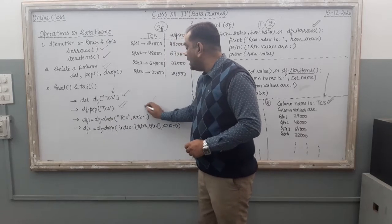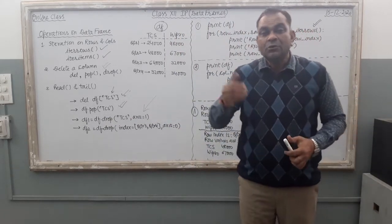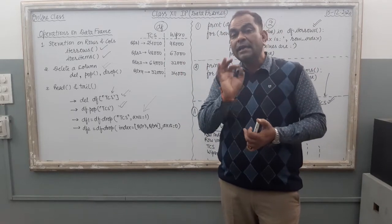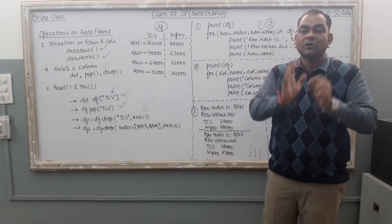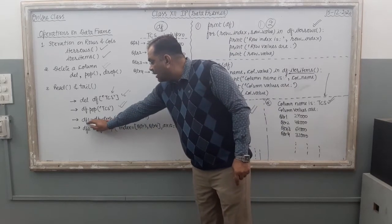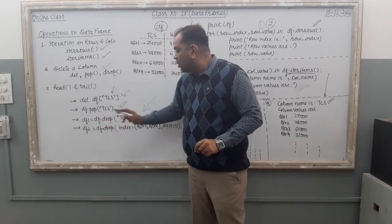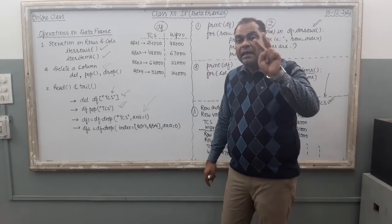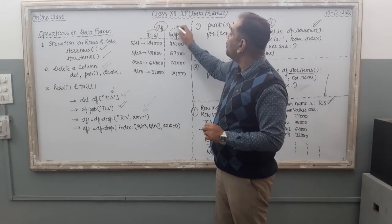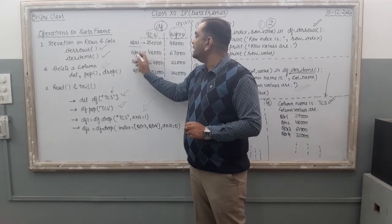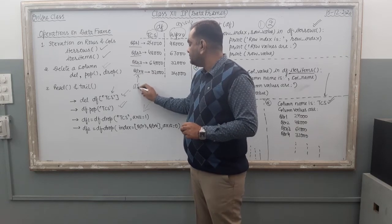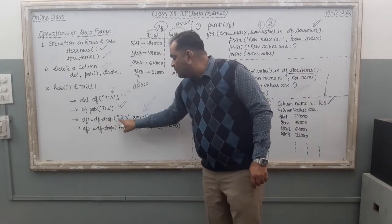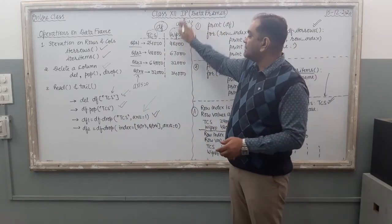Now see what is there with the drop command. The drop command gives us the facility to delete columns from your DataFrame. A new DataFrame is created: df1 = df.drop('TCS', axis=1). Here, axis 1 means columns — TCS and Wipro are on axis 1 position — and axis 0 means indexes. So df.drop('TCS', axis=1) removes the TCS column from axis 1.